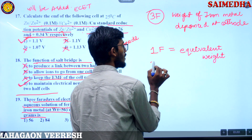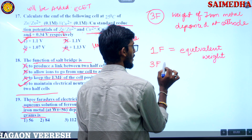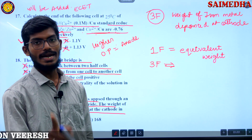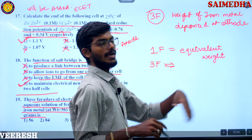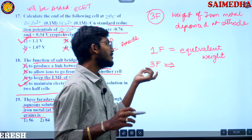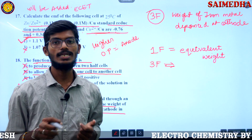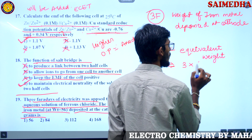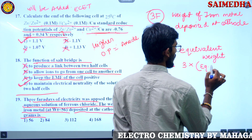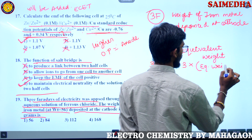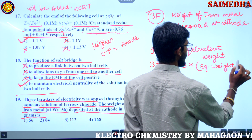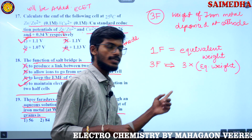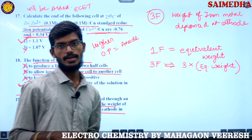So what will three Faradays give? Three Faradays will give us three times the equivalent weight. One Faraday gives equivalent weight, so three Faradays gives 3 × equivalent weight.